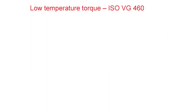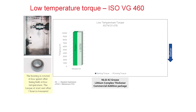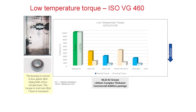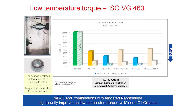We see similar results with the ISOVG 460 grease. The mineral oil was frozen at the start, and even after one hour, the low-temperature torque was too high to be measured. With high-viscosity CPAO, the numbers drop significantly. Low-temperature torque drops further with MPAO 150 and 300. Adding AN to the MPAO grades doesn't have a severe impact, with results similar to the conventional grease formulation.